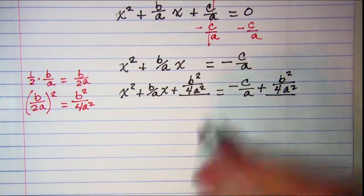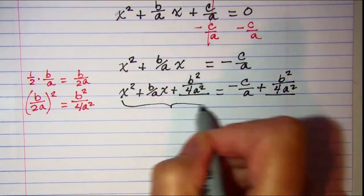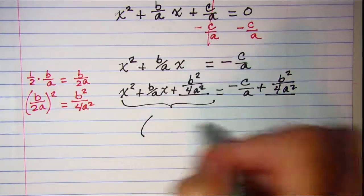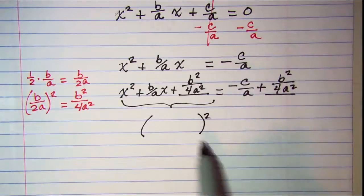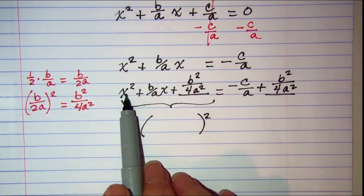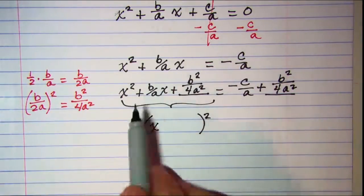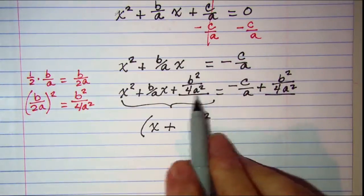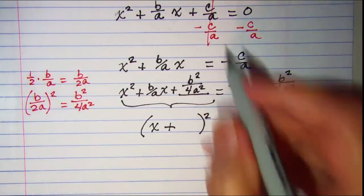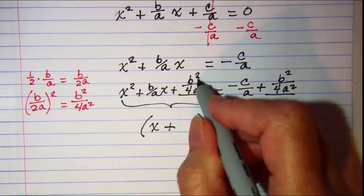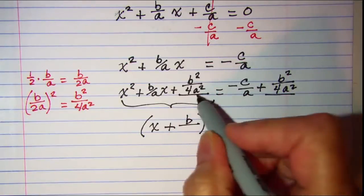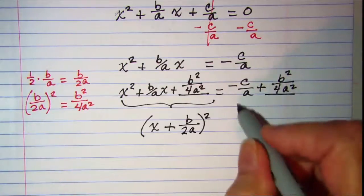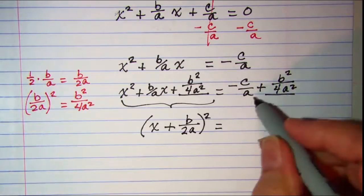My next step is to factor the trinomial on the left as a perfect square trinomial, so it will be a binomial squared. We need the square root of x squared as our first term — that's x — plus the square root of the last term as our second term. The square root of b squared is b, and the square root of 4a squared is 2a. Then on the right side I need to combine these terms.